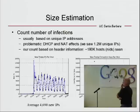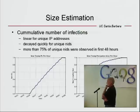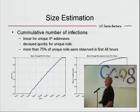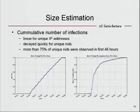Looking at cumulative infections: unique IP addresses grow linearly. But using host NIDs, we had 75% of the new IDs in the first 48 hours, then it flattens out — not completely, because new infections are ongoing, but not at the linear rate you see with IP-based counting.